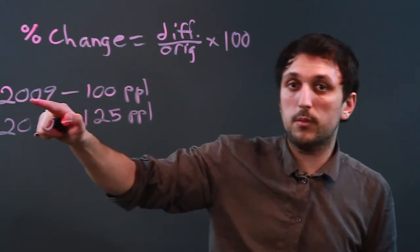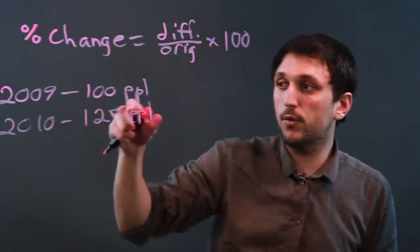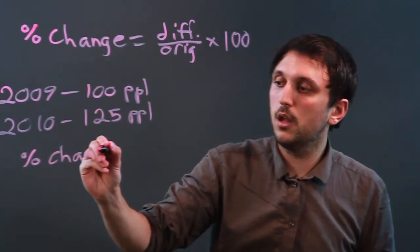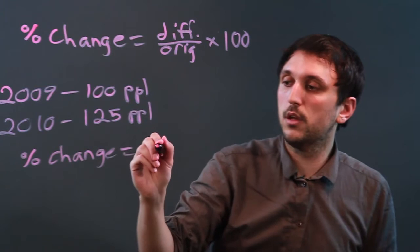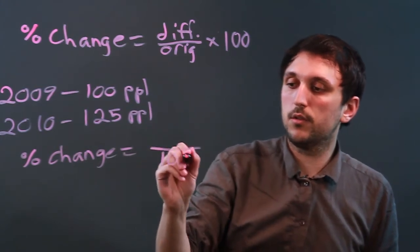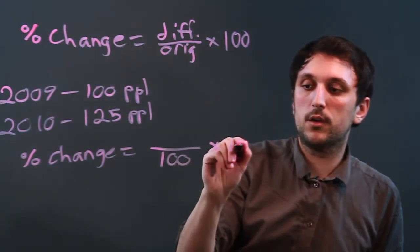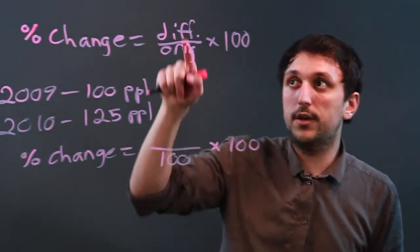Our original number is always the older number and that's 100. So we say percent change, which we want to find out, equals something over 100. But again, it's better to start with your original times 100. Now we have to calculate the difference.